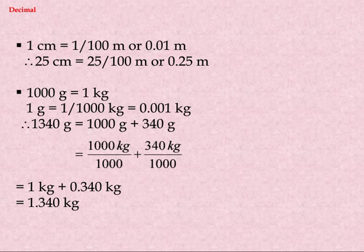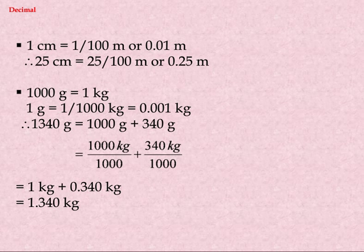1000 grams equals 1 kilogram. Therefore, 1 gram equals 1/1000 kilograms, which equals 0.001 kilograms. So 1340 grams equals 1000 grams plus 340 grams, which equals 1 kilogram plus 0.340 kilograms, equals 1.340 kilograms.